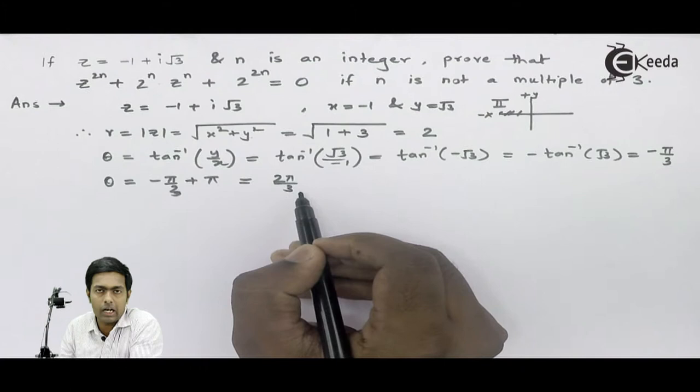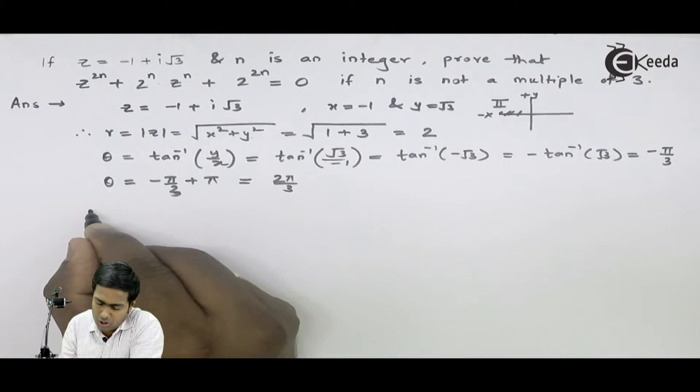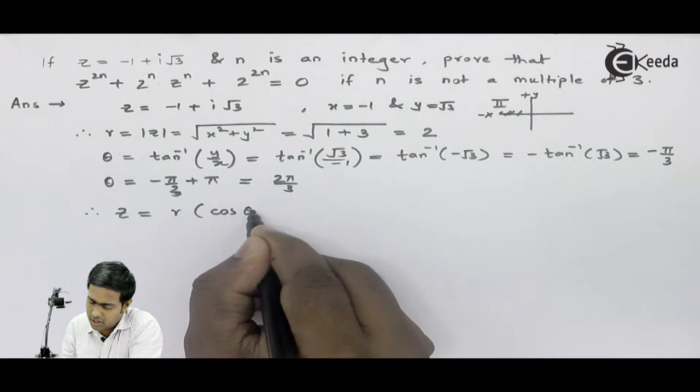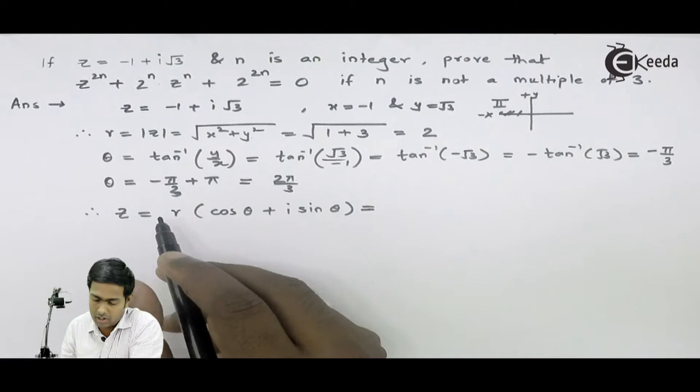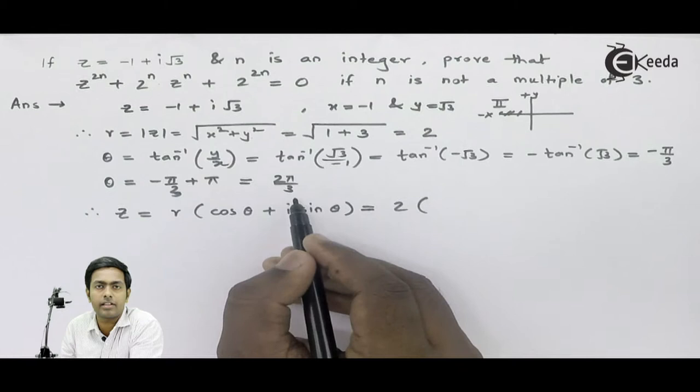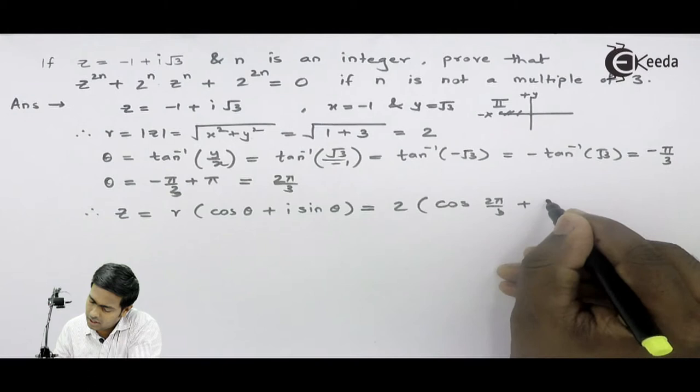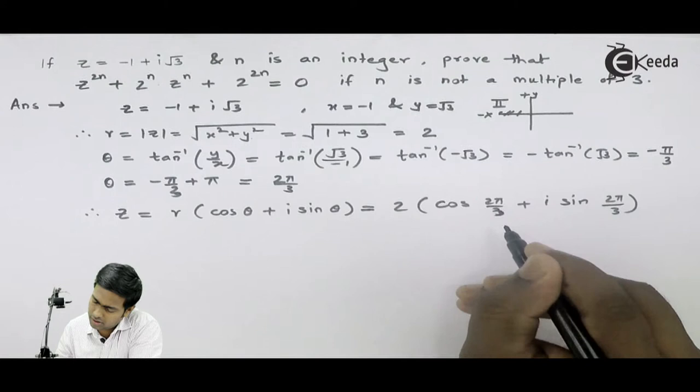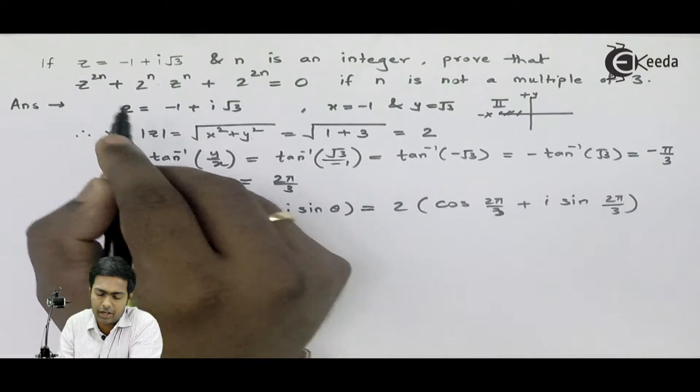Now we convert the number to polar form. Therefore z becomes r times (cos theta plus i sine theta). Here r is 2 and theta is 2 pi by 3, so z equals 2 times (cos 2 pi by 3 plus i sine 2 pi by 3). This is the polar form of the complex number.